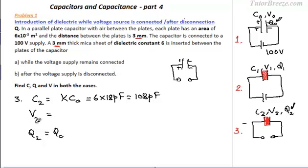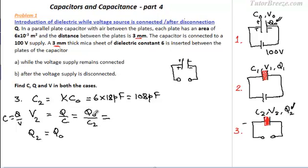Now we need to find V2. Since C equals Q over V, we have V equals Q over C. Q is Q0 and C is C2 which we just calculated. You can see that the voltage reduces by the dielectric constant times — so if it was originally 100 volts, it becomes 100 over 6 volts.